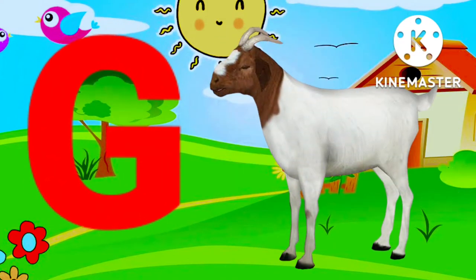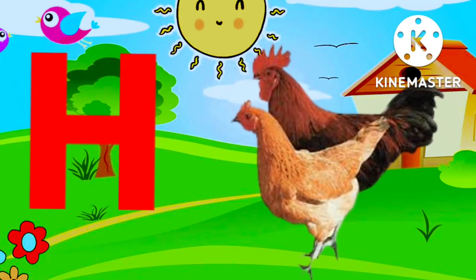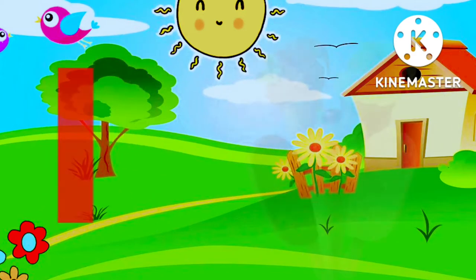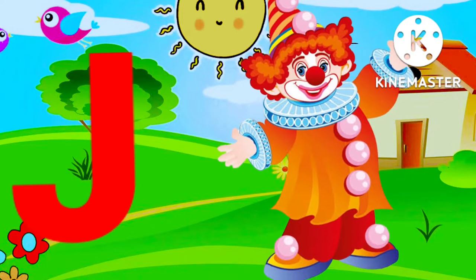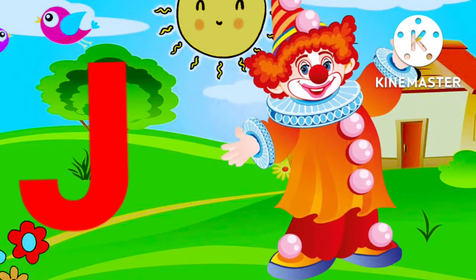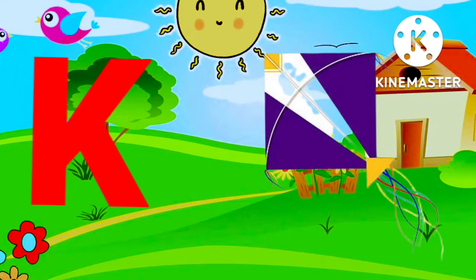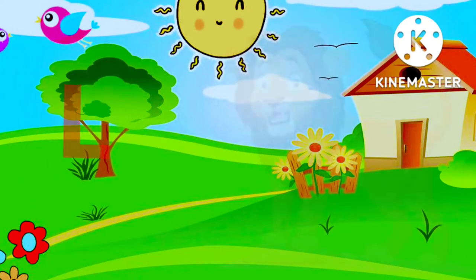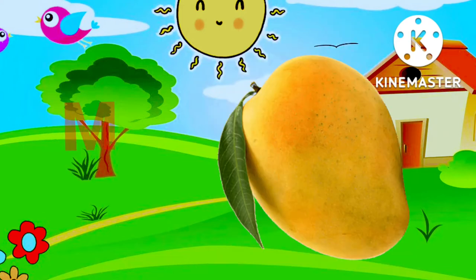G for goat, H for hand, I for ice cream, J for joker, K for kite, L for lion.